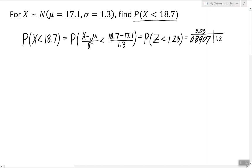So the probability of x being less than 18.7 is equal to 0.8907.